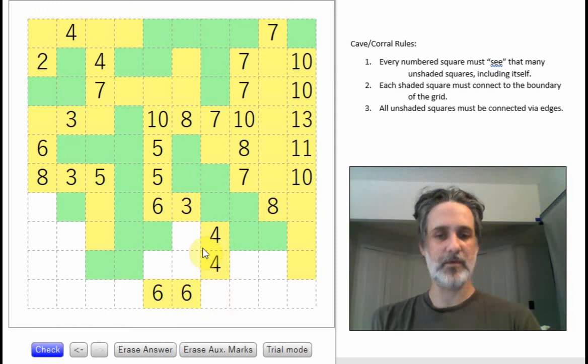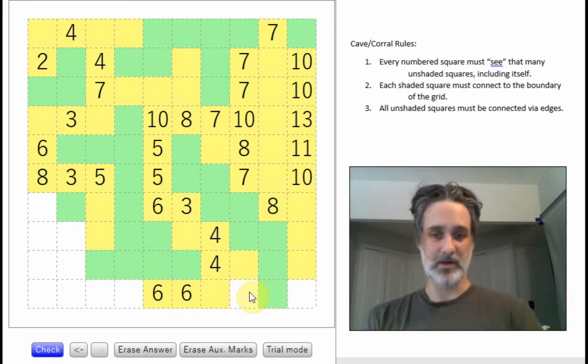Okay, this 4, I only have 4 possible, so it's got to fill out there. This 3 already has 1, 2, 3, shaded in there. Battenberg. Love the Battenberg. Okay, these 6's might be interesting. Let's check out this 4 here. 1, 2, 3, 4, and then these shaded squares have to escape. So there we go.